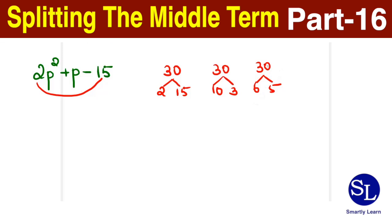For us, 6 times 5 is 30 and 6 minus 5 will give us plus 1. So now let's assign the signs. I need the product as minus 30 and the sum has to be plus 1, which means I place the plus sign to the 6 and the minus sign to the 5.